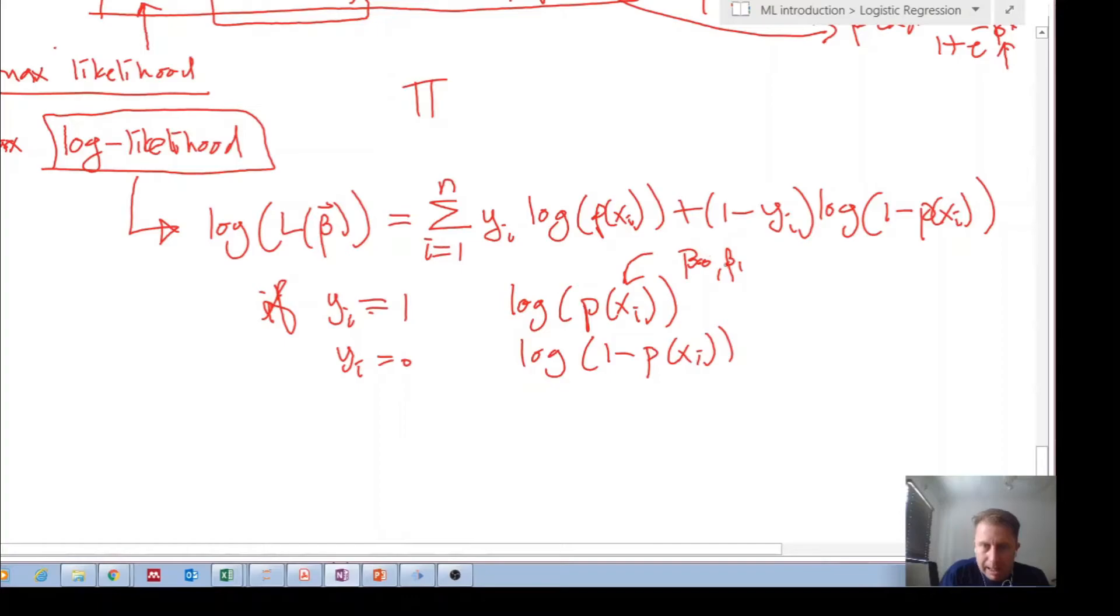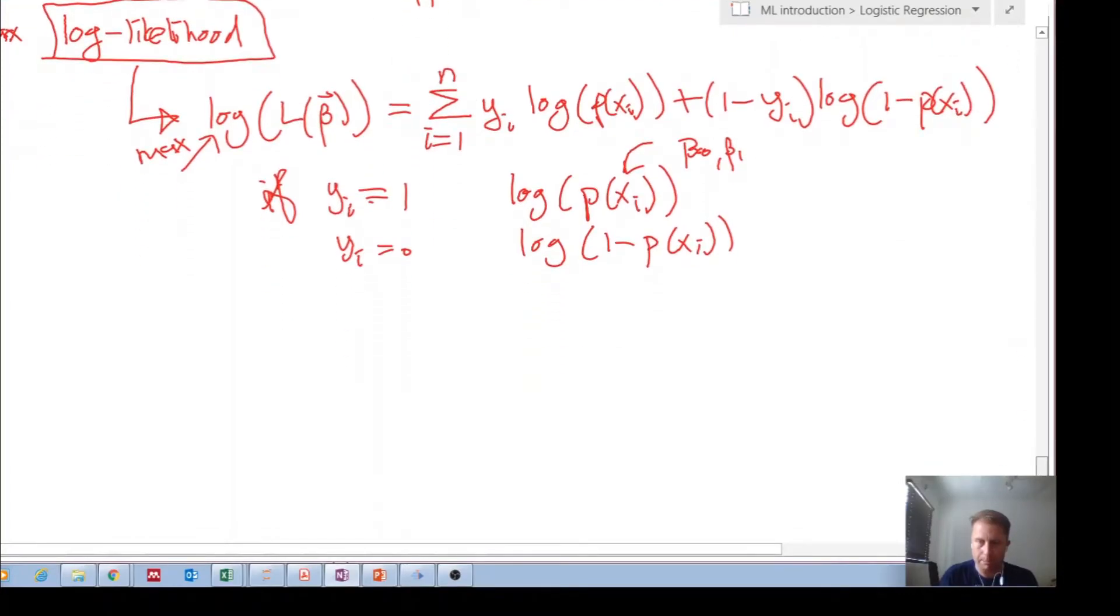So remember, we're trying to vary our beta parameters so that we maximize, we want to maximize the log likelihood. Okay, so that's what we want to do. We go through each and every case. If in a supervised learning, if y output was one, we plug one in, we plug one in there and we get this value, then we add the next value and we add the next value and we add the next value, and we're carrying out the summation of the logs of the probability or the log of one minus the probability.